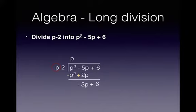And now we start again. Remember the steps are just divide, multiply back and then subtract. So take the leftmost term again and the p on the left divides into minus 3p minus 3 times.